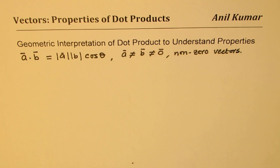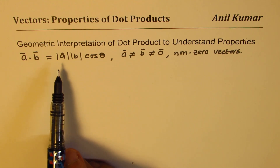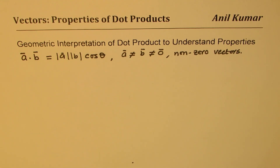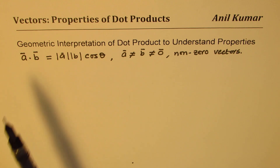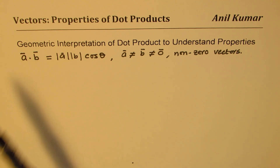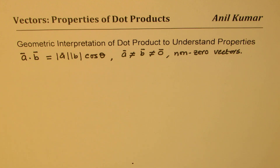This is important to specify since if any one of them is a zero vector, you get a zero result and many properties which we will discuss may not hold. So we are saying there are two vectors a and b, and their dot product is the product of their magnitudes with the cosine of the angle between them.